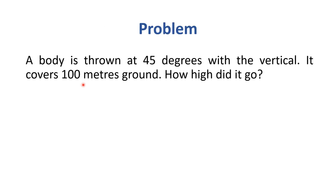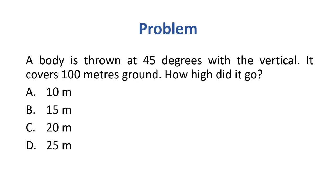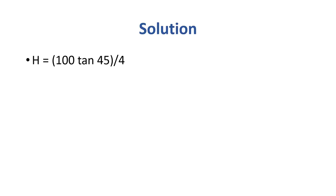Problem: A body is thrown at 45 degrees with the vertical and covers 100 meters on the ground. How high did it go? Options: 10m, 15m, 20m, 25m. Correct answer is Option D — 25 meters. Using the shortcut formula h = R tanθ / 4: h = 100 × tan45° / 4 = 100 × 1 / 4 = 25 meters.